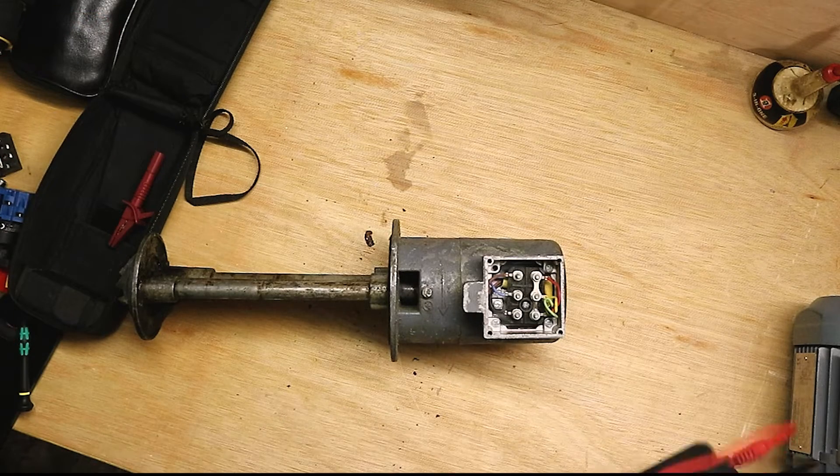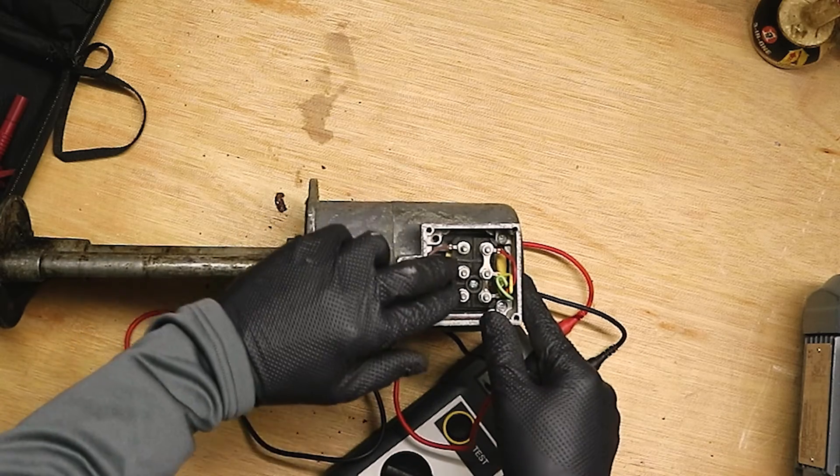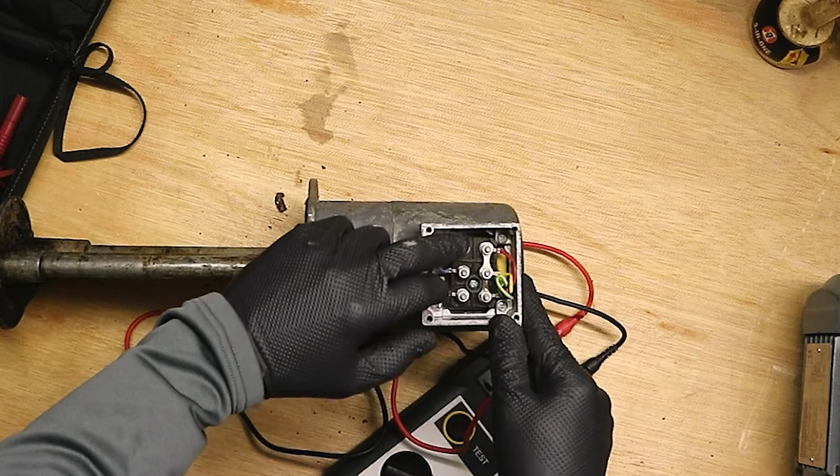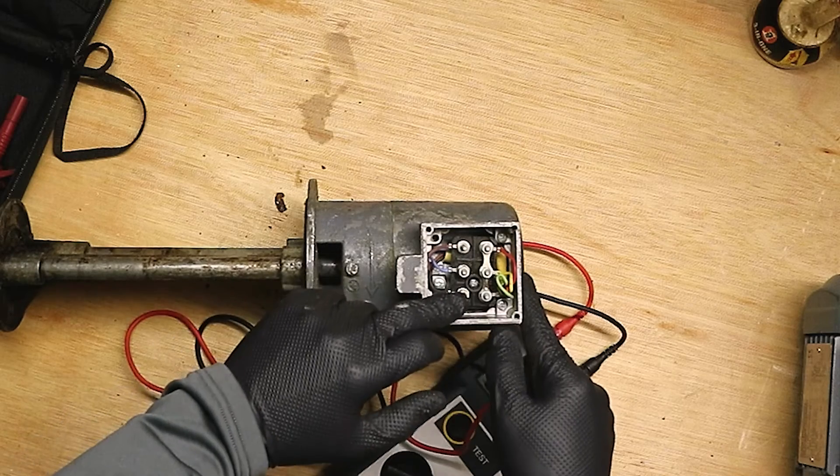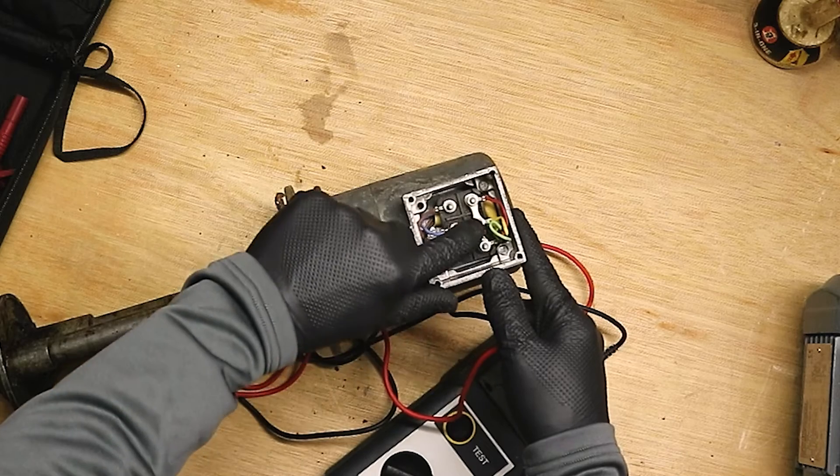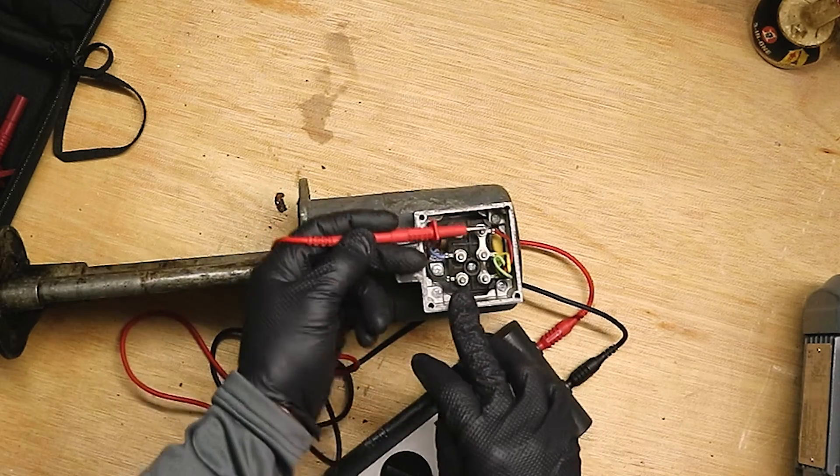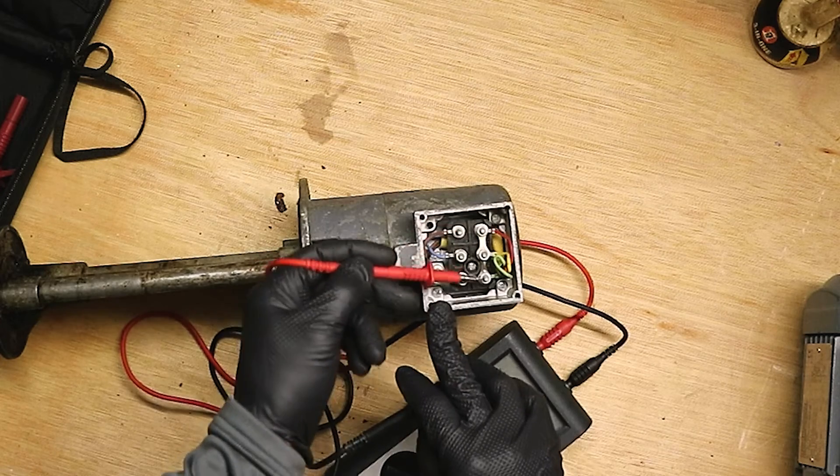So, we have the terminal cover off. You can see that this motor is connected in star, so we've got our three windings U, V and W coming back to star point and the jumpers have been connected across the star point. This one is in star, if they were long ways they would be connected in delta.